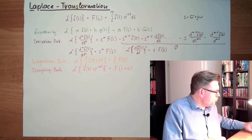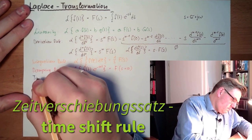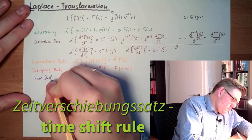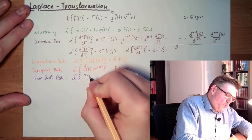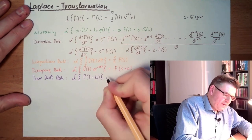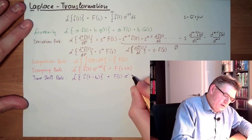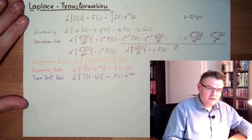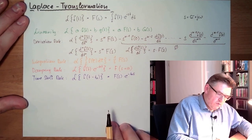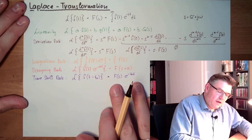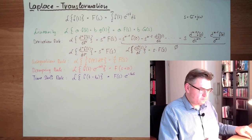There is also the time shift rule. The Laplace transform of a function shifted by an amount of time t₀ ends up as a damping in the picture area. A time shift in time gives damping in the picture area; a shift in the picture area gives damping in the time area.